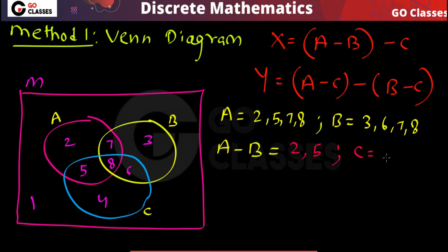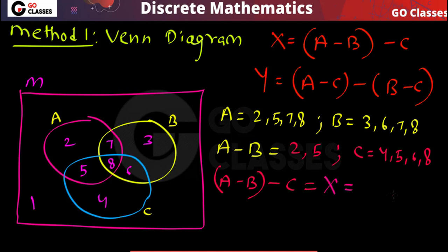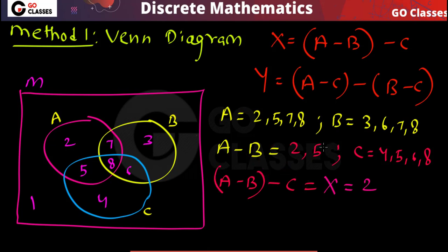Now, A minus B minus C: the area of C is {4, 5, 6, 8}. From A minus B (which is {2, 5}), we remove the area of C. That leaves us only area 2. So the area of X is just {2}.